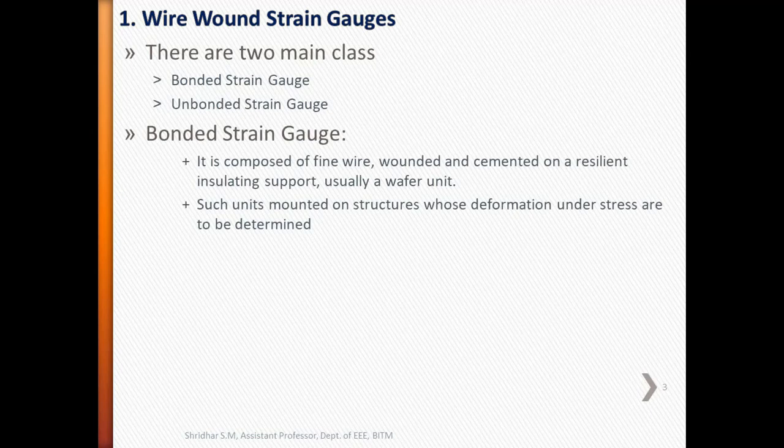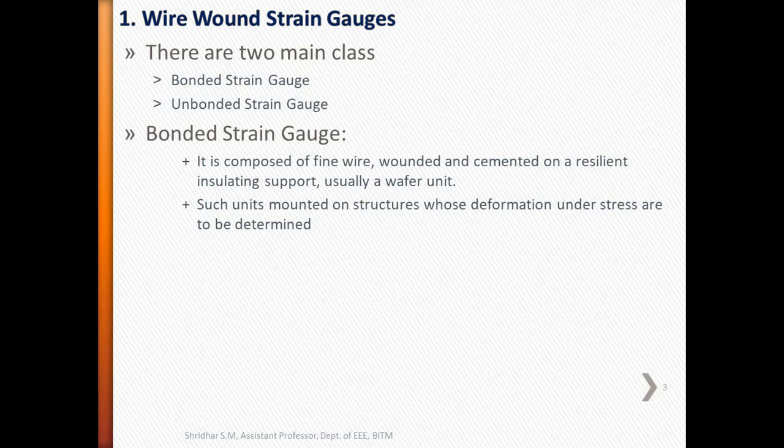Bonded strain gauges are composed of fine wire bonded and cemented on resilient insulating support, usually a wafer. Such units are mounted on structures whose deformation under stress is to be determined.